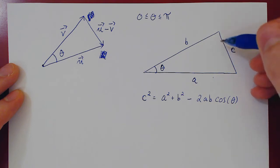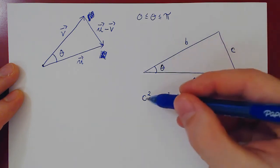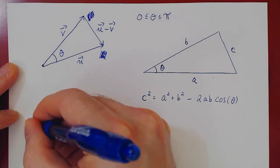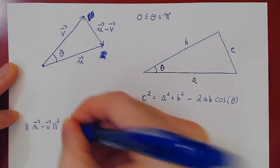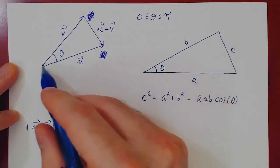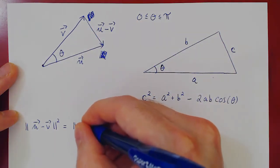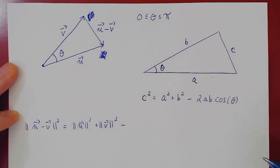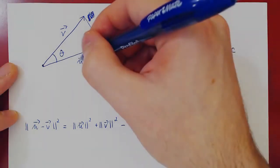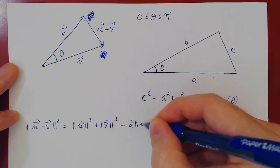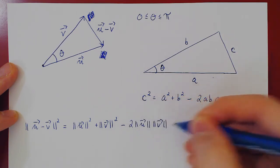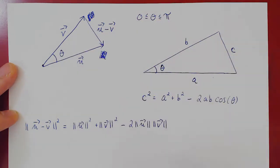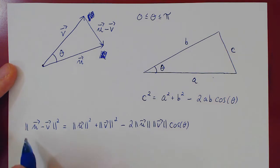The edge opposite to the angle theta is the vector u minus v. So by the law of cosines, the norm of u minus v squared equals the norm of u squared plus the norm of v squared, minus twice the length of u times the length of v, times the cosine of the angle theta.